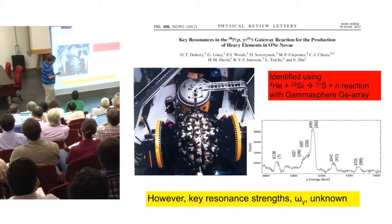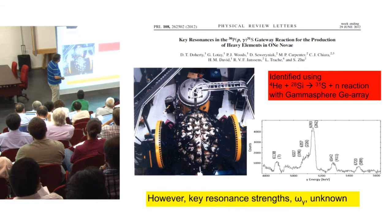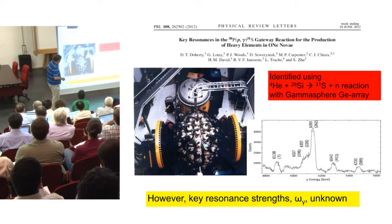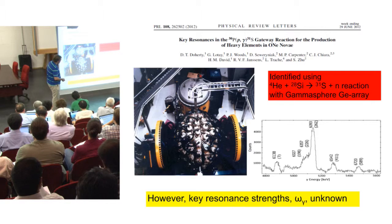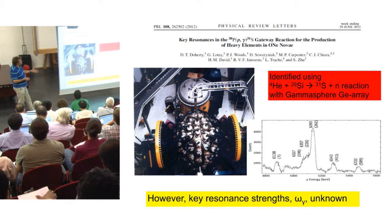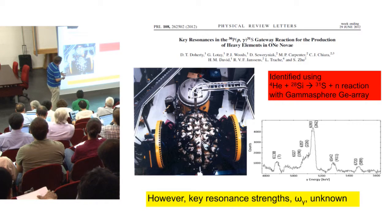We saw some critical states and from the angular distributions we were able to determine their spin. This one at 196 keV will be important — this humble little shoulder will turn out to be very important. The problem is this is the first step in the process: it's identifying where the important resonances are, but you still don't know the strengths of those resonances.